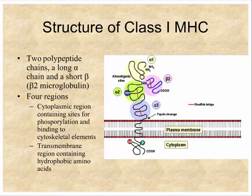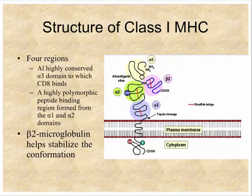These three extracellular domains are similar to immunoglobulin domains and are thought to derive from the same primordial gene. Each forms a globular region with an intrachain disulfide bond. The alpha-3 domain is highly conserved, while the alpha-1 and alpha-2 domains are highly polymorphic. It is the alpha-1 and alpha-2 domains that create the site where the peptide binds. Beta-2 microglobulin does not contribute to the peptide-binding capacity.